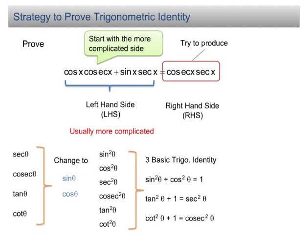The double-angle formula allows you to prove more trigonometric identities involving sin 2θ, cos 2θ, tan 2θ, sec 2θ, cosec 2θ, and cot 2θ. The double-angle formulas are also given in the SPM formula list.